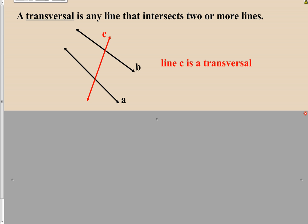We've used the word transversal a couple of times and no doubt you've been wondering what it is. No reason you would have worked with this term before, but here it is now. A transversal is simply a line that intersects two or more lines. In the diagram on your screen, Line C is a transversal because it hits two or more lines. Line B is not necessarily a transversal until we have evidence that it hits another line, and the same would be true for Line A.